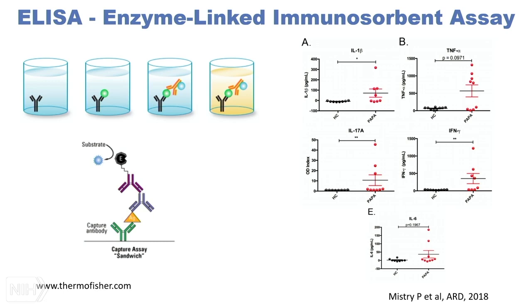Recently, Dr. Mariana Kaplan's group showed that in PAPA syndrome, these patients have high serum levels of IL-1 beta — which classically is known as being very difficult to measure in serum — high levels of TNF-alpha, and significantly higher levels of IL-18 and interferon gamma in comparison with healthy controls. IL-6 was also higher, but not significantly.